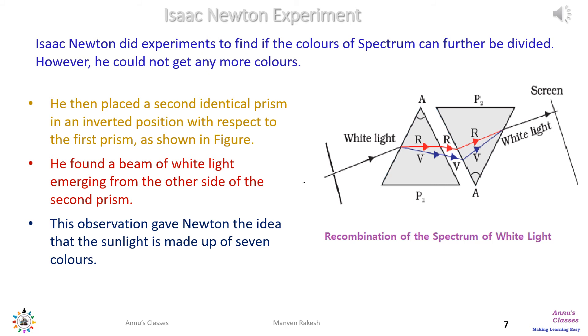He led the seven color spectrum fall as an incident ray on the second prism, as shown in the figure. He found that from the second prism what was emerging out was a single white color. This observation gave Newton the idea that sunlight is made up of seven colors.